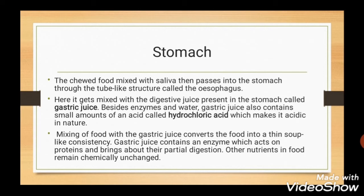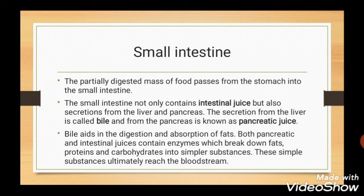Small intestine. This partially digested mass of food then passes from the stomach to the small intestine. Here, food is mixed with intestinal juice, a secretion of the small intestine. Two more juices are added: one from the pancreas, known as pancreatic juice, and another is bile, which comes from the liver. Bile aids in digestion and absorption of fats. Intestinal and pancreatic juice contain enzymes that break down carbohydrates, fats and proteins into simpler substances, which ultimately reach the bloodstream.